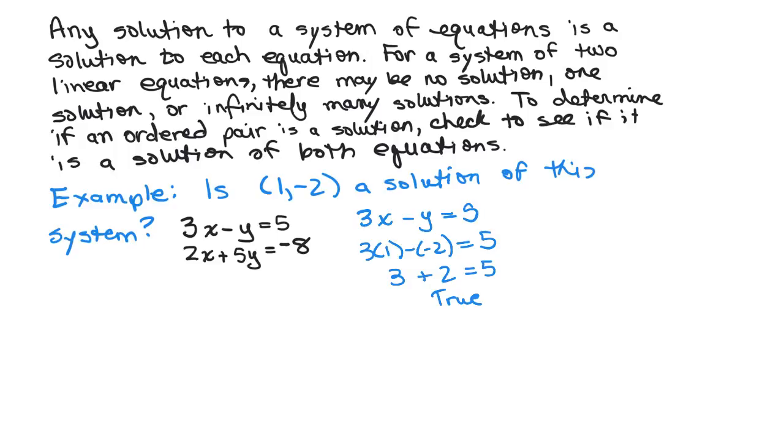Let's try the other equation. 2x + 5y = -8. We're going to put in 1 for x and -2 for y. So we have 2 plus negative 10 equals negative 8.